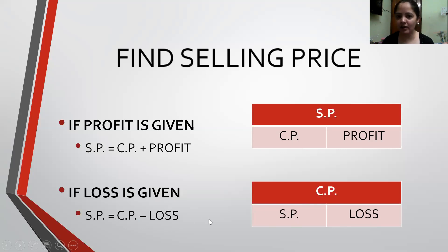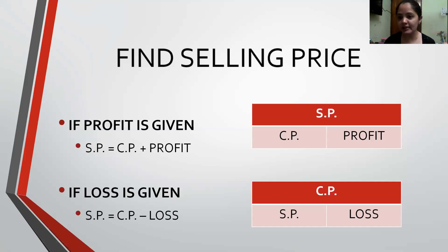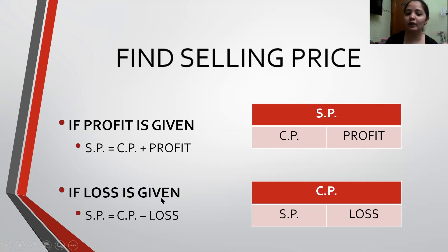If you have written it down, you can see it is exactly the reverse. If I have to find the Cost Price and Profit is given, I subtract. If Cost Price and Loss is given, I add. Whereas if I have to find the Selling Price and Profit is given, I add. And if I have to find the Selling Price when Loss is given, I subtract. Be careful not to mix them up when solving questions.